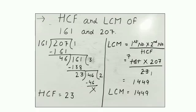So 46 is the remainder. Now the divisor will become the dividend, so 161 becomes dividend and 46 becomes divisor. 46 times 3 is 138. After subtracting 138 from 161, we get 23.